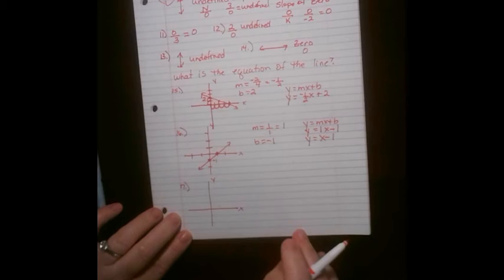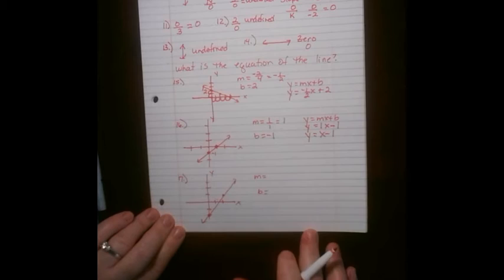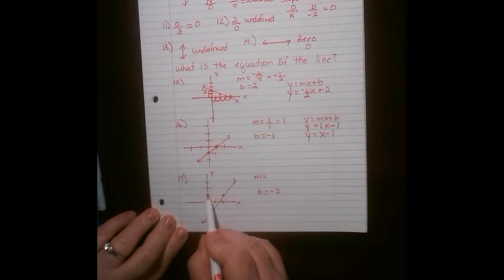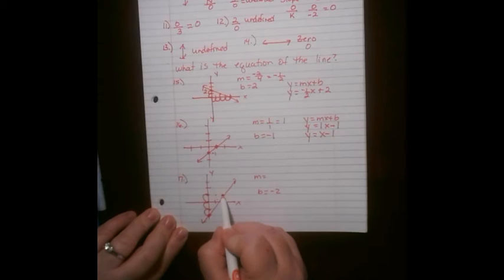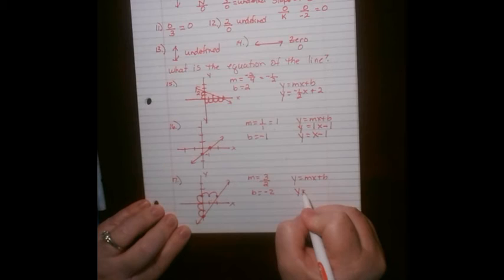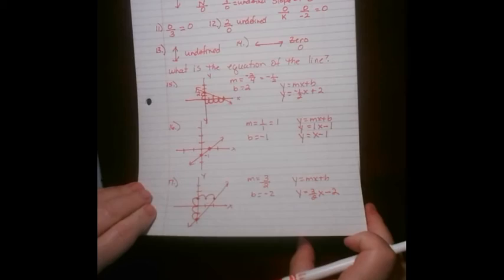For number 17, we have the points (−2, ?) and (2, 1). I find the y-intercept first — it's down here at negative 2. The slope is positive: I count up 3 and to the right 2, giving a slope of three-halves. So the equation is y equals three-halves x minus 2. Your test is only 10 questions, so I'm giving you more practice than you need.